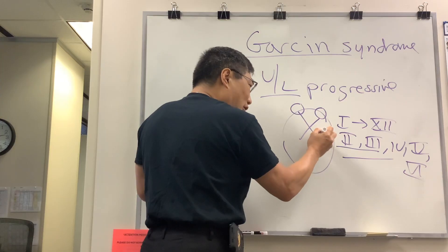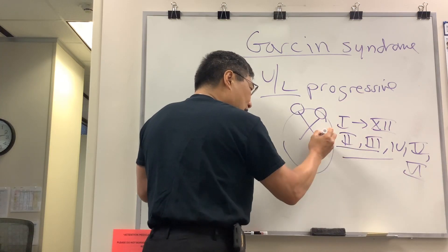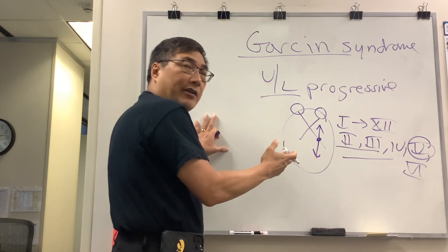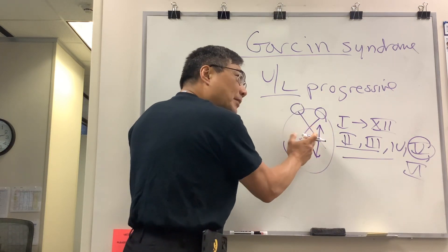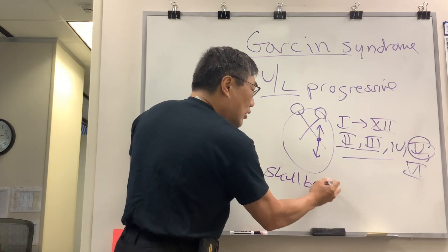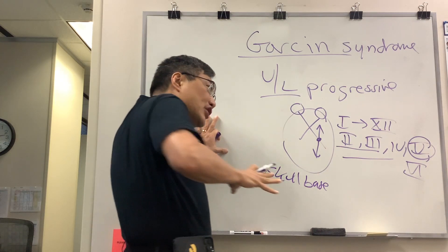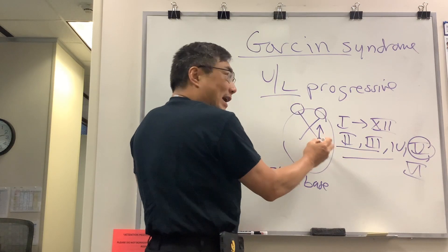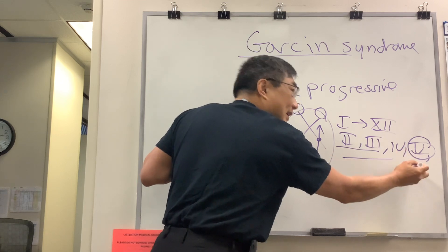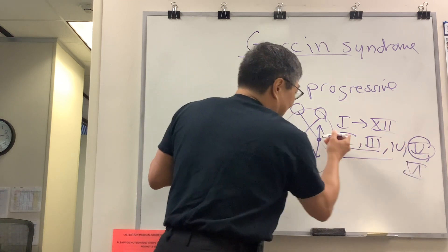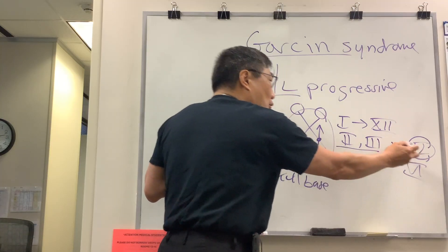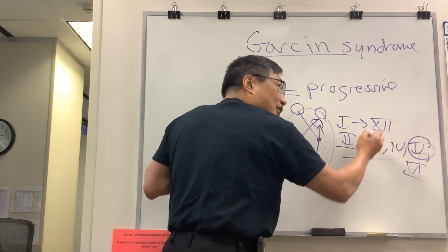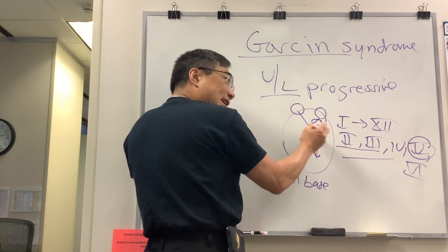...normally what happens is you start somewhere, like five, and then it goes anteriorly and posteriorly from there. What that means is a skull base lesion — a lesion based in the skull, or an infiltrated process creeping along the skull base — can start with a five, they have a numb face, then they have a six and diplopia, and if it goes into the cavernous sinus, a three and a four, and if it goes into the orbital apex, a two, so you have an optic neuropathy, a cavernous sinus syndrome, and a six nerve palsy.